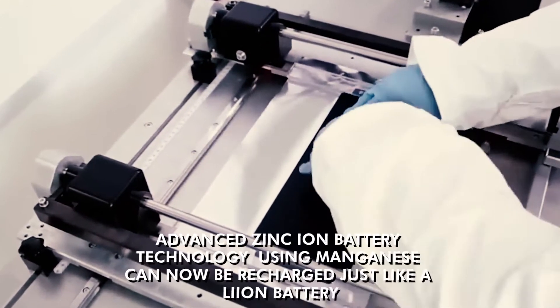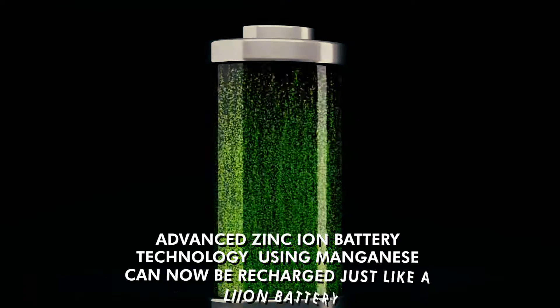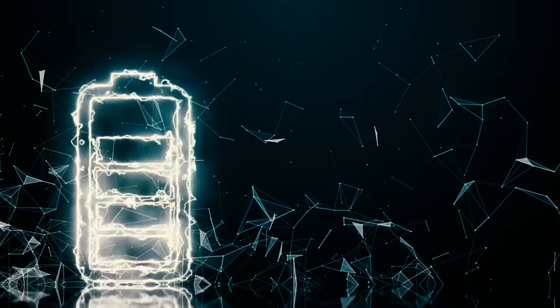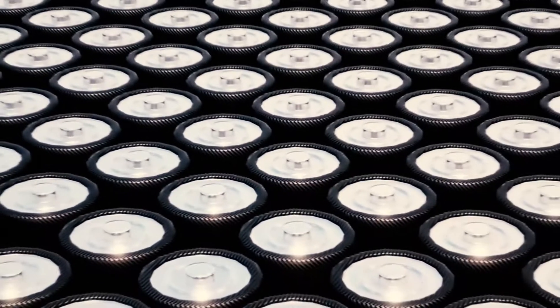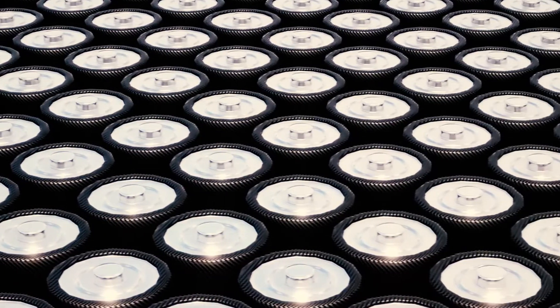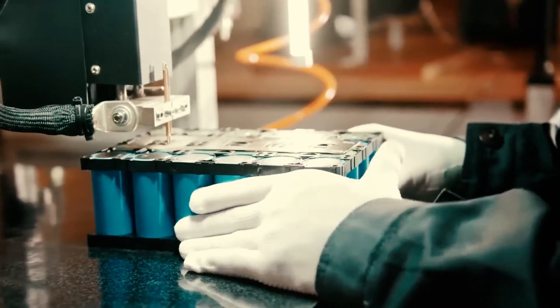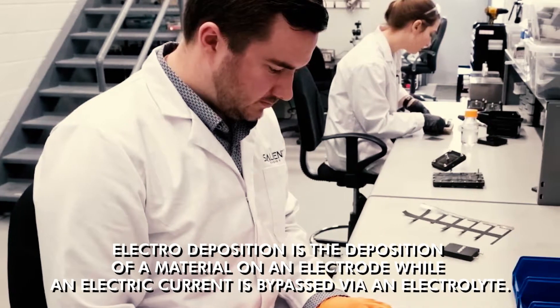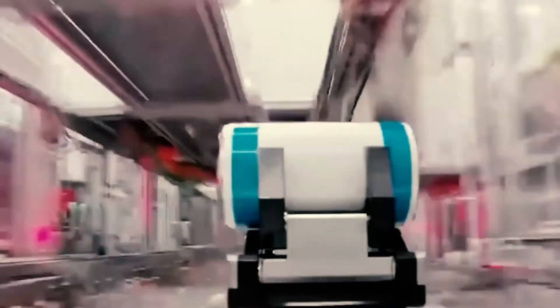However, advanced zinc-ion battery technology using manganese can now be recharged just like a lithium-ion battery. So that's one massive problem fixed. During the investigation, two major issues with zinc-ion batteries were also identified: increasing the specific energy of the complete zinc-ion cell while avoiding the parasitic hydrogen evolution process during the zinc electrode deposition stage. Electrode deposition is the deposition of a material on an electrode while an electric current is passed through an electrolyte. That is also done in electroplating.